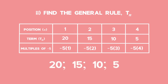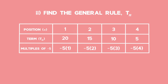The term in the first position was 20, the term in the second position was 15, the term in the third position was 10, and the term in the fourth position was 5. We then list the multiples of negative 5, multiplying the constant difference by the term position to see how this multiple relates to the actual value of the term. If we want to get from minus 5 to 20, we need to add 25.